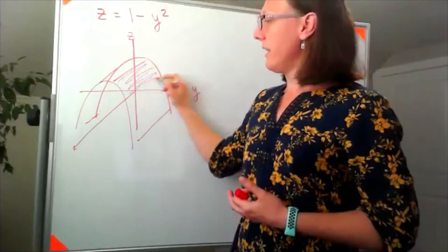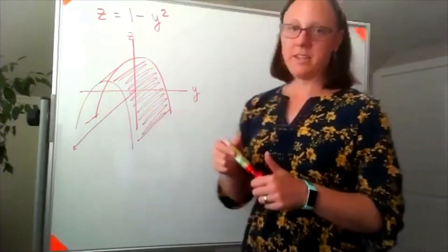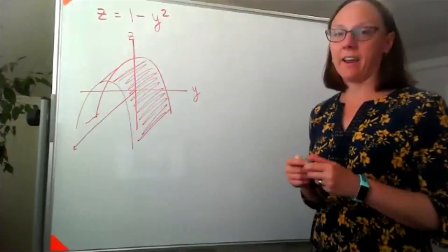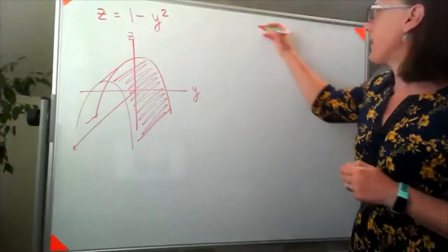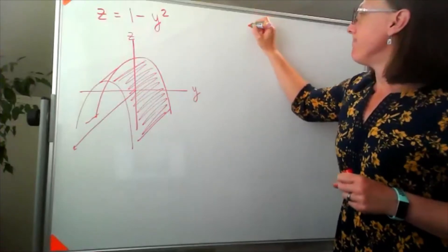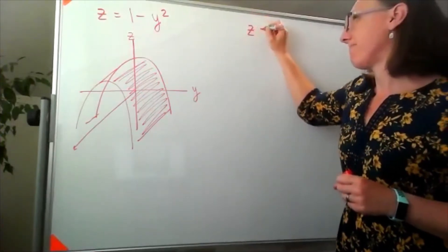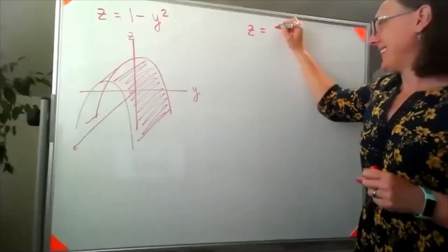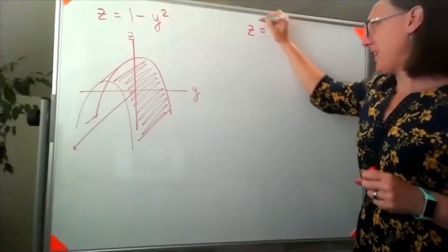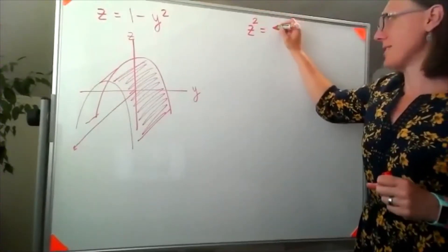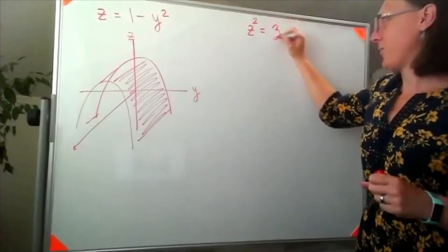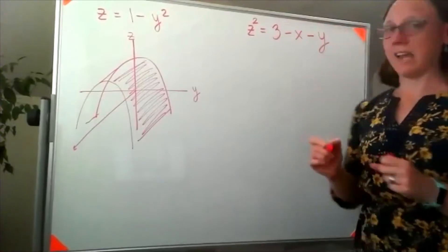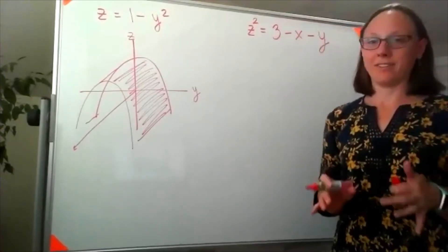Let's say that I was given something like Z squared equals 3 minus X minus Y. I just made this up. I have no idea what this looks like.